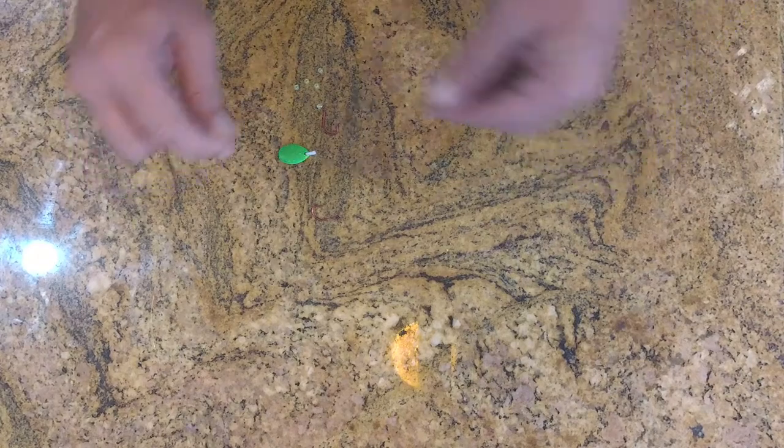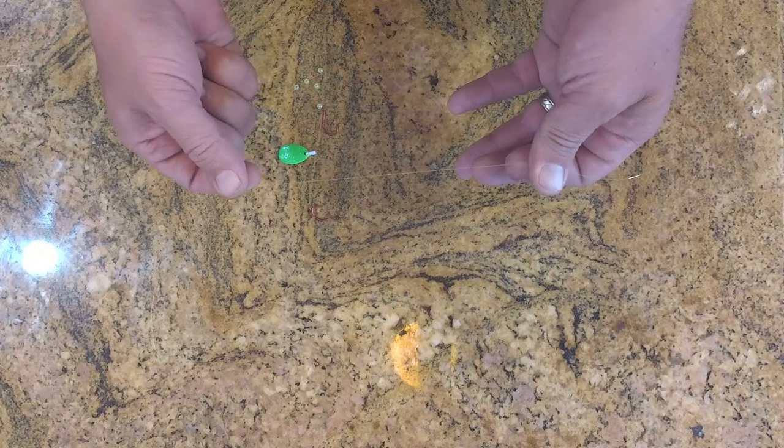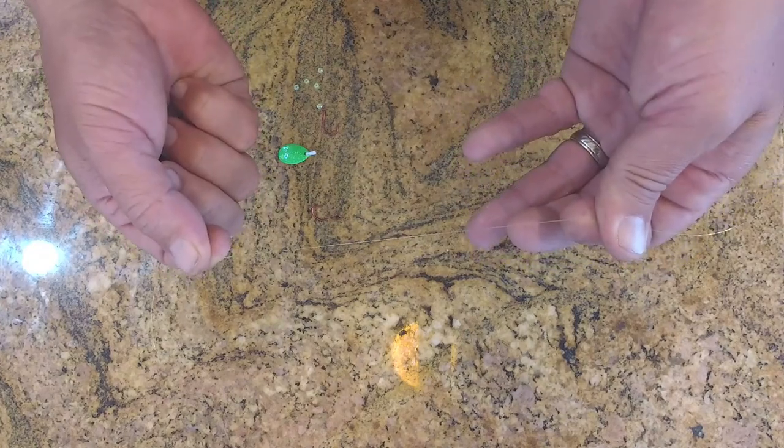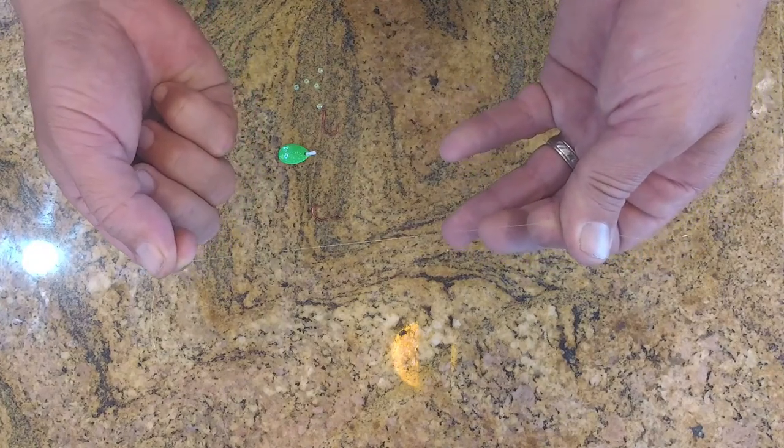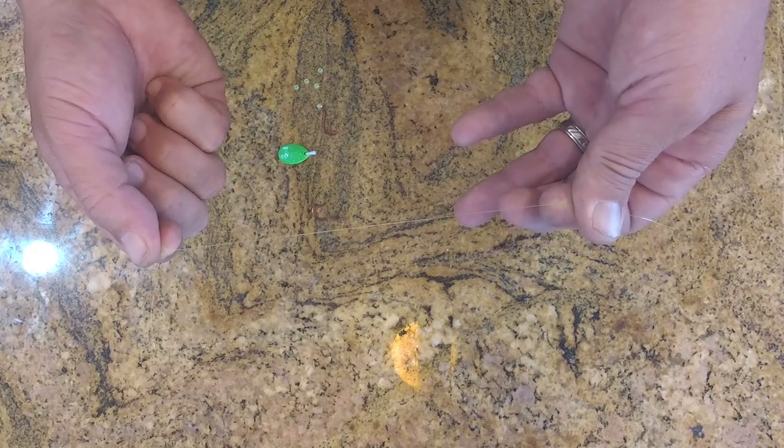So it basically starts with having the right components. First the fishing line. I'm using a green fishing line for this. I use Berkley XT, Trilene, that's all I use for mine, and 10 pound test.